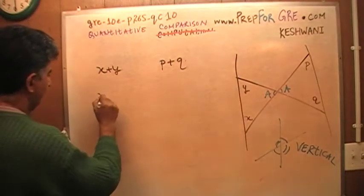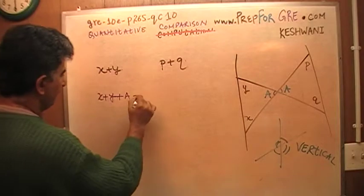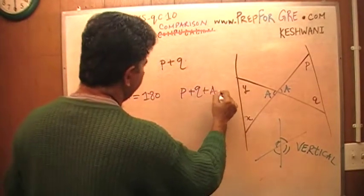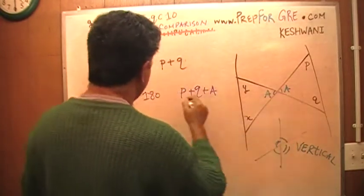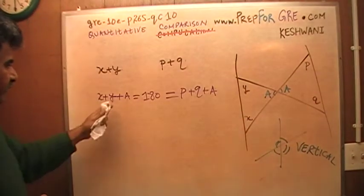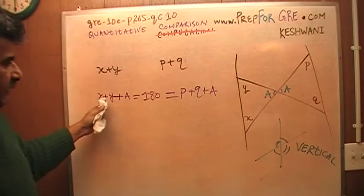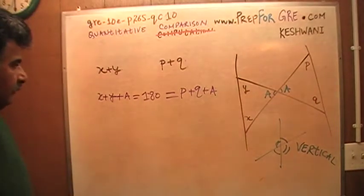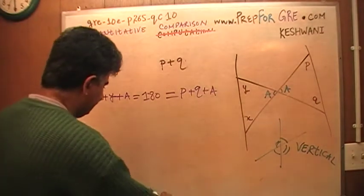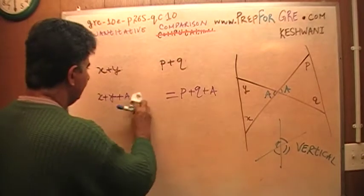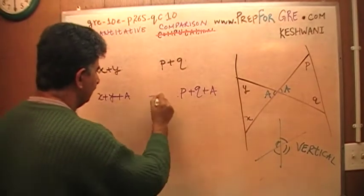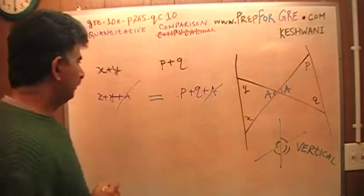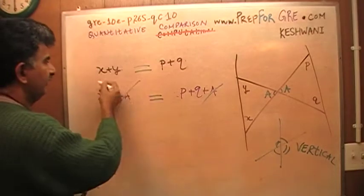So here's my x plus y plus a, and that I know is 180. And I also know that p plus q plus a is also 180. Which means these three angles add up to the same quantity as those three angles. That tells me that these two quantities are equal to each other. Since a appears on both sides, it plays no role. Hence, these two quantities are equal to each other.